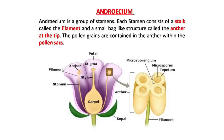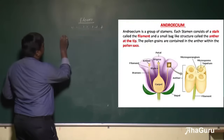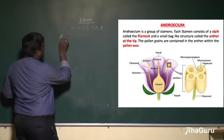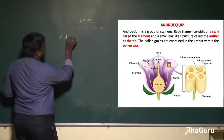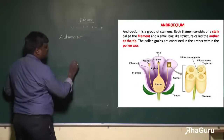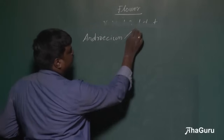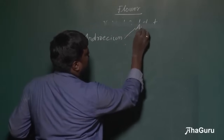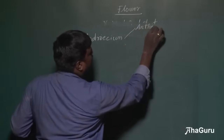Androecium is the male reproductive part, the one which produces the male gamete. The androecium consists of two things: anther and filament.